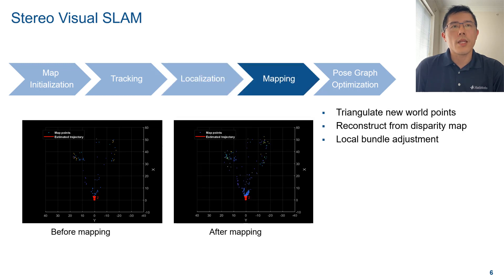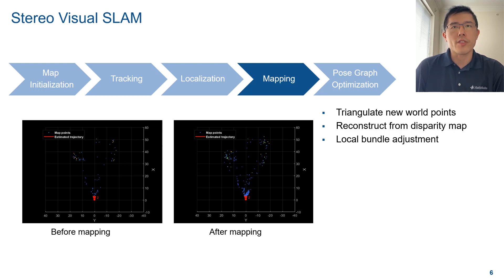While localizing the camera, you can map the environment at the same time. There are two ways to do that. One is using triangulation to create new 3D world points across different pairs of stereo images. The other way is using the disparity map within the same pair of stereo images to compute 3D points. The new map can be further refined using bundle adjustment.